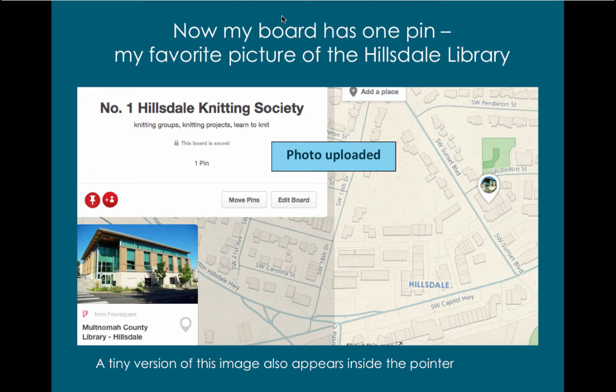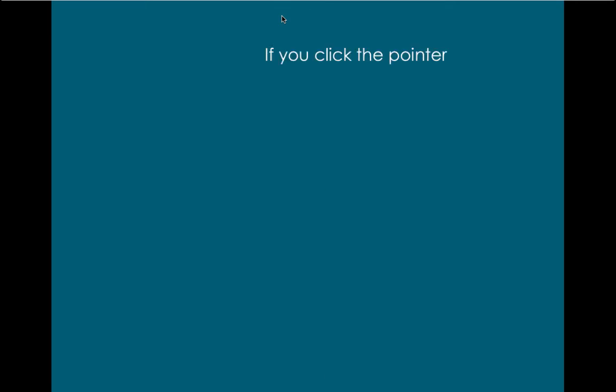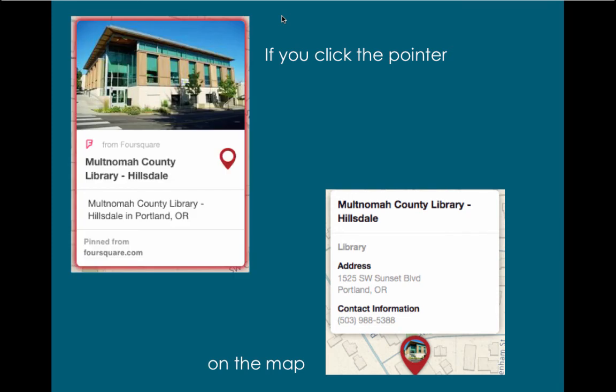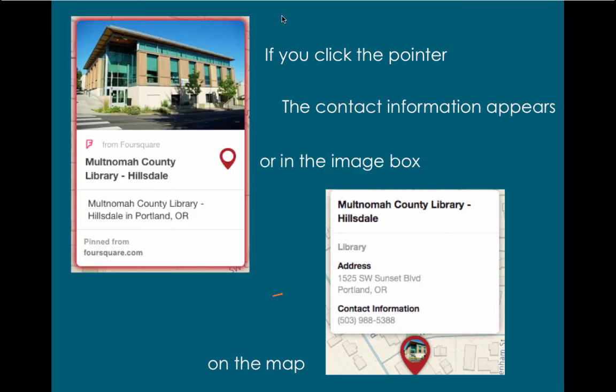A tiny version of this image also appears inside the pointer. If you click the pointer on the map, or in the image box, the contact information appears, including the address and phone number.